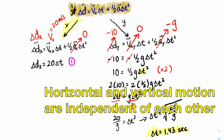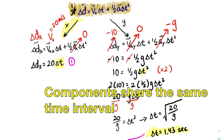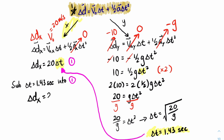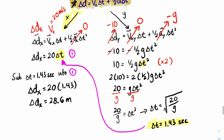The horizontal and vertical motions are independent, but connected by the same time interval. Now that we have the time from the y component, we substitute it into the x component equation. Horizontal distance equals 20 meters per second times 1.43 seconds, which gives approximately 28.6 meters.